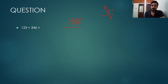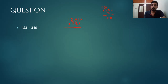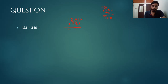Now 2 into 6 is 12, plus the carry over 1, gives 13. We write 3 and carry 1. Then 1 into 6 is 6, plus carry 1 is 7. So the first step gives us 738.